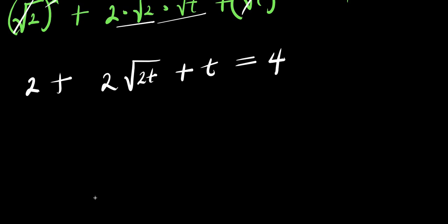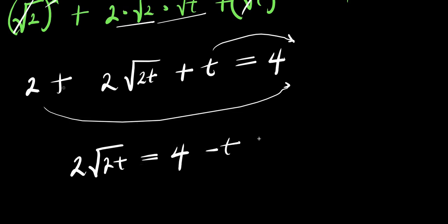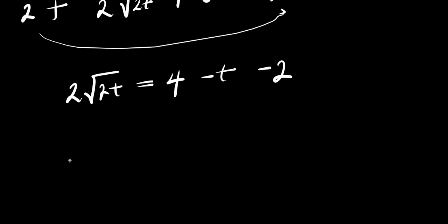So from here, I can decide to move t over here and also move the 2 over here. I have 2 times 2 root t equals 4 minus t minus 2, so I'm going to have 2 root 2t equals 4 minus 2 minus t, which is 2 minus t.